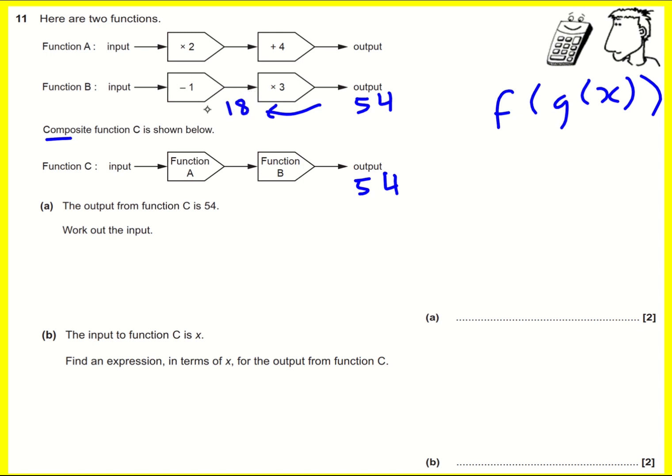And then instead of minusing one, I'm going to add one. And so I'm going to get 19 at the start of my function B. And I've dealt with that bit there. So that input for function B becomes the output for function A. So I've got 19 here.